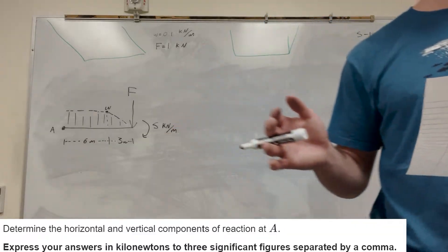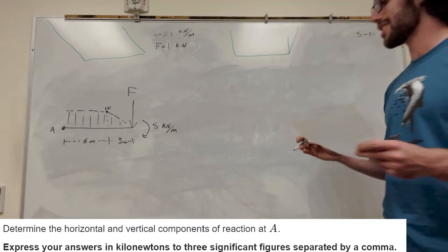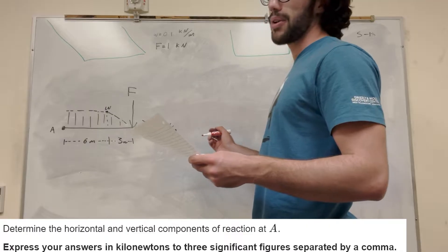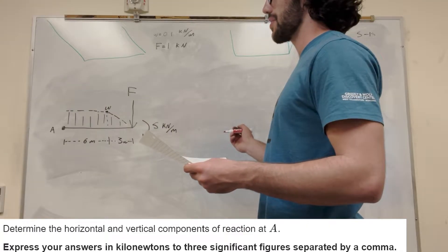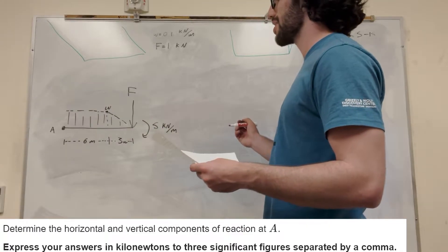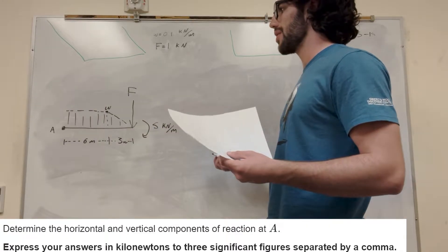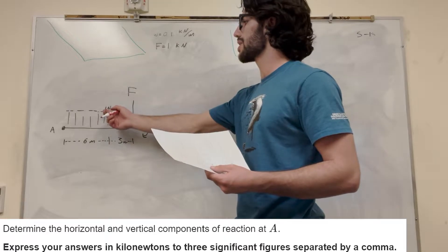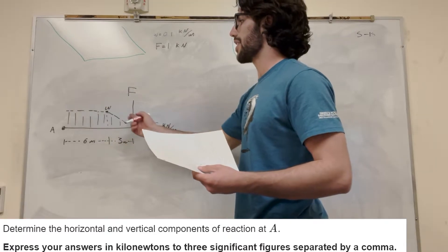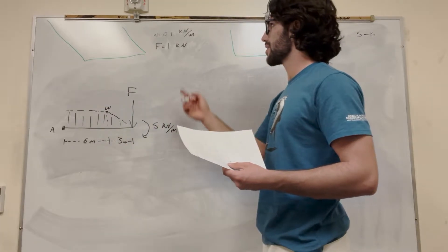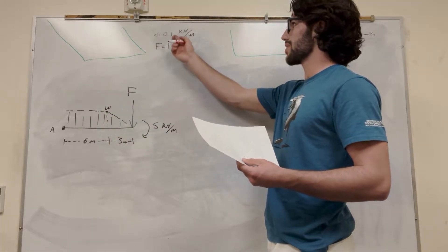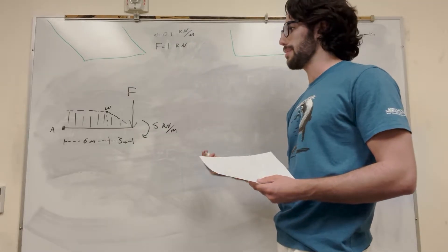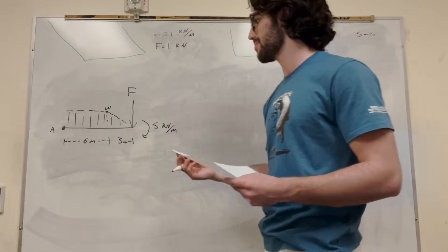So what am I solving for? We're looking for the horizontal and vertical components of the reaction. We're going to take the sum of the forces in the y direction, but in order to do that we need to find how much force this distributed load area exerts. We're given that it exerts 0.1 kilonewtons per meter, so we just need to find how many meters it is.